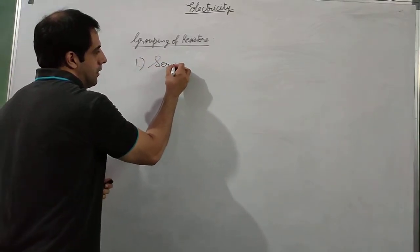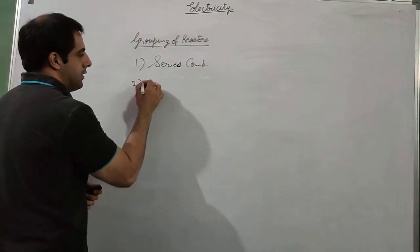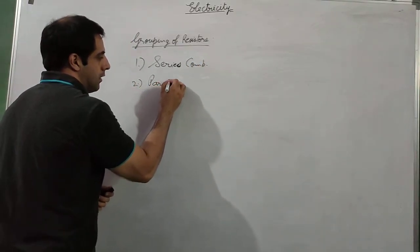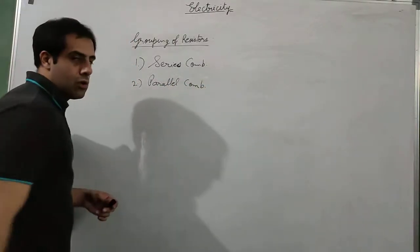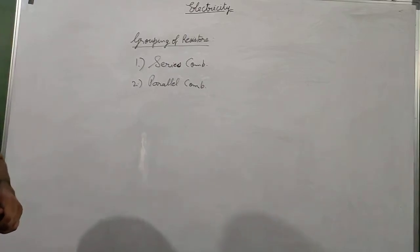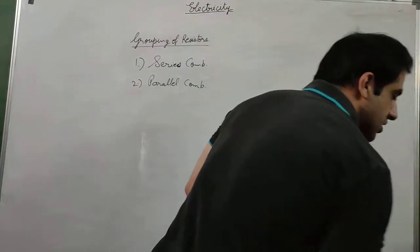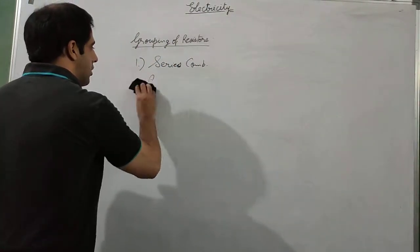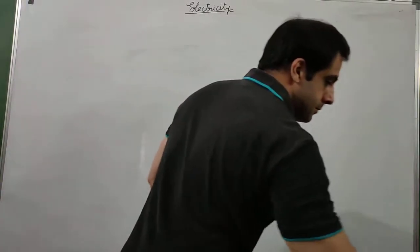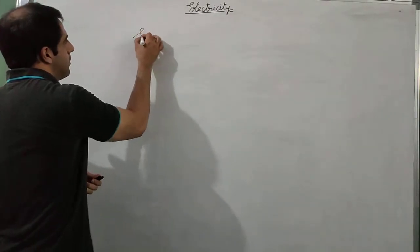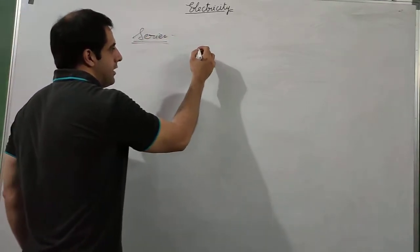The first method is series combination and another method is parallel combination. So resistances can be connected in two ways: series combination and parallel combination. First we are going to study about series combination.